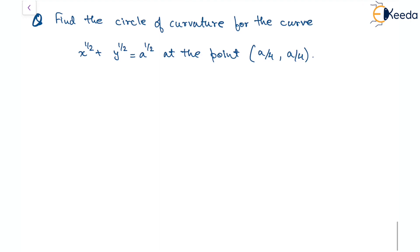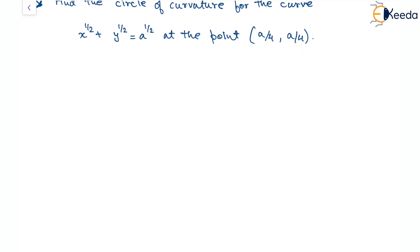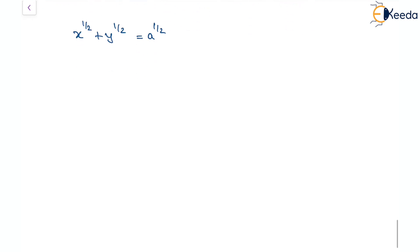To find the radius of curvature or the center of curvature, we need the first and second derivatives of y with respect to x. The curve is given as x^(1/2) + y^(1/2) = a^(1/2). So, differentiating both sides with respect to x: